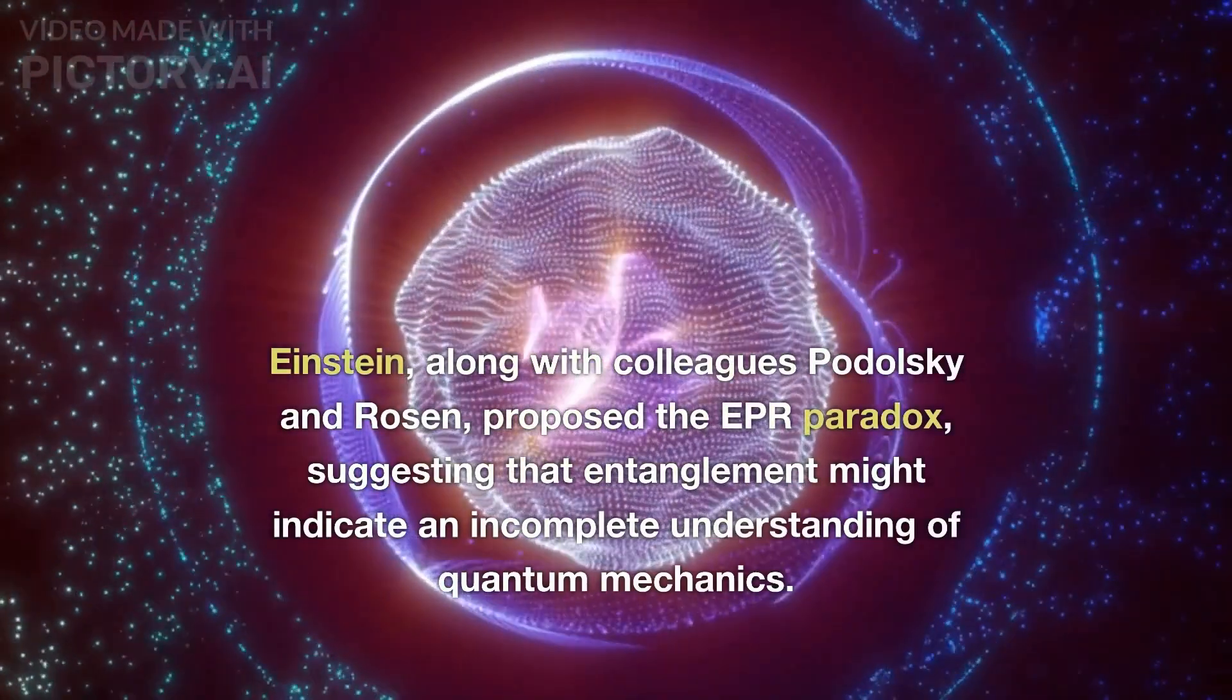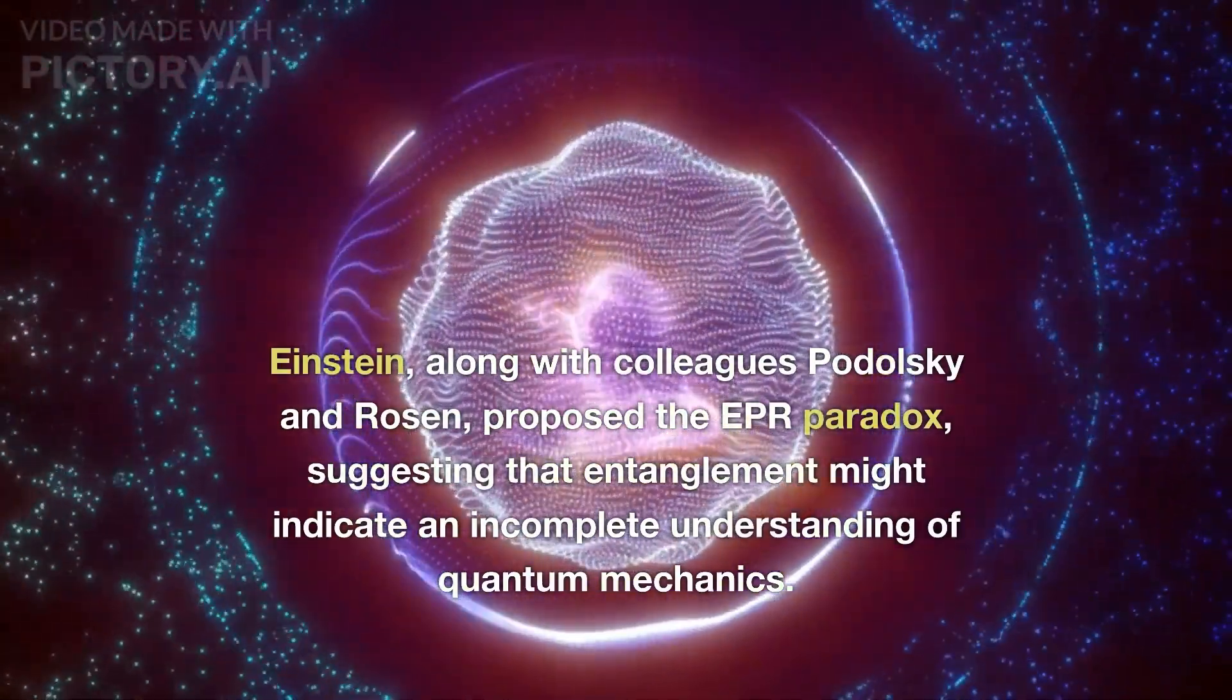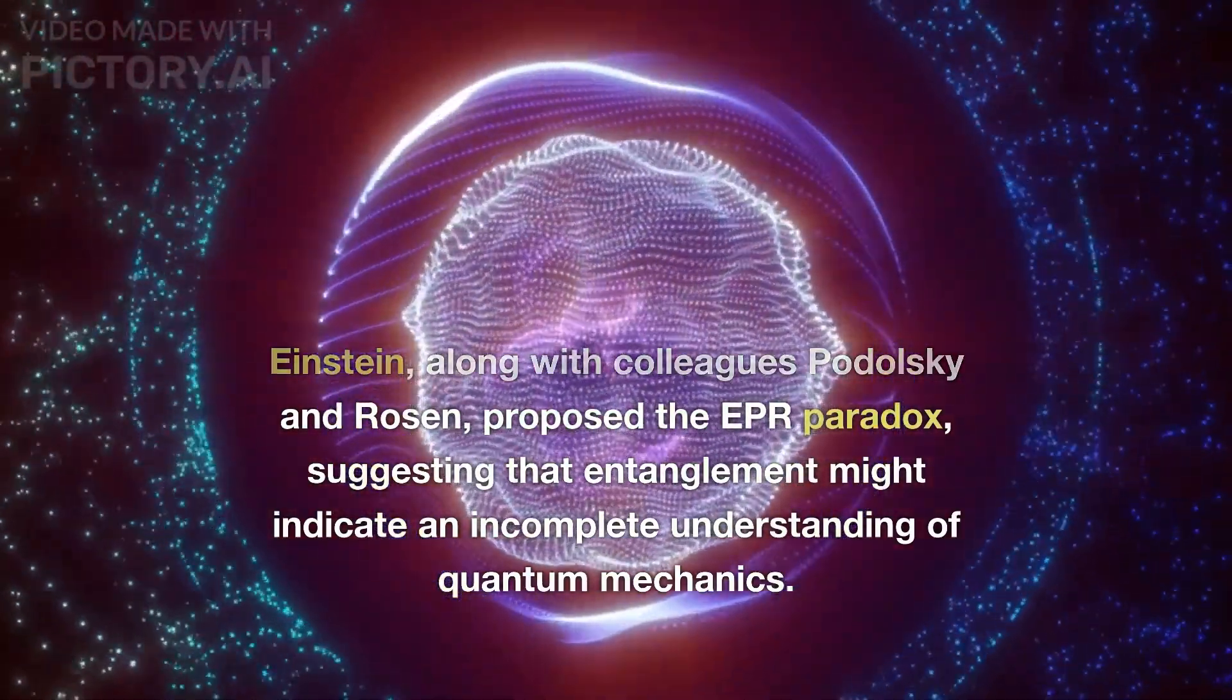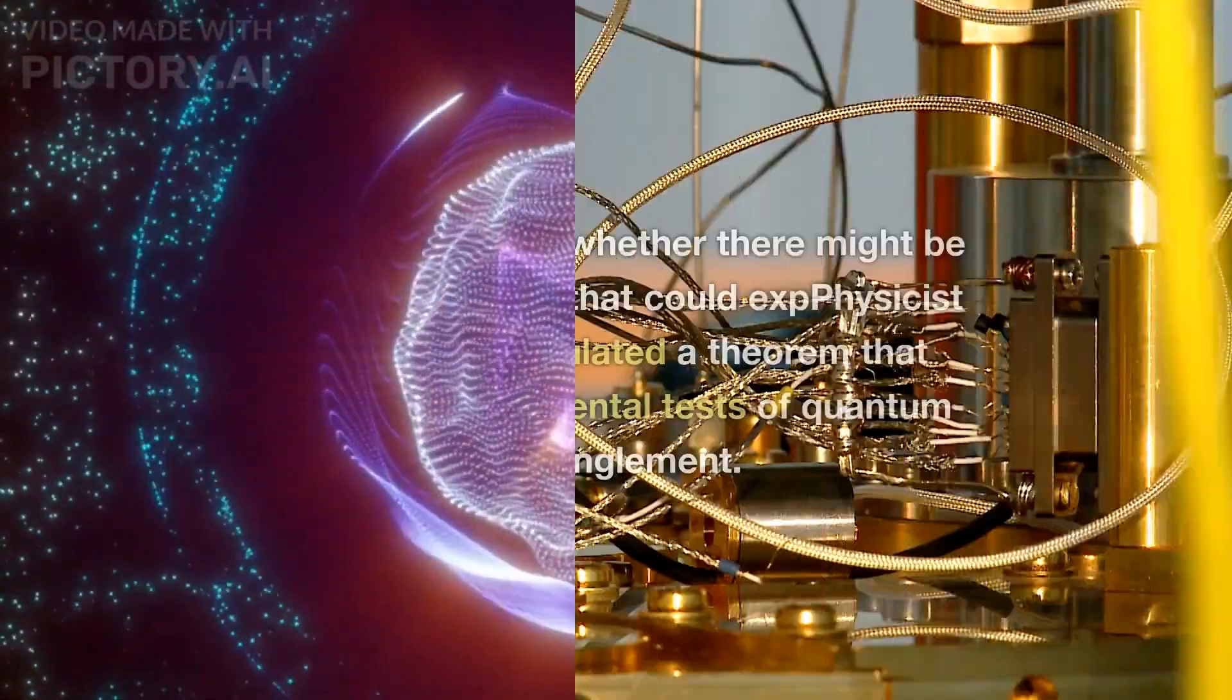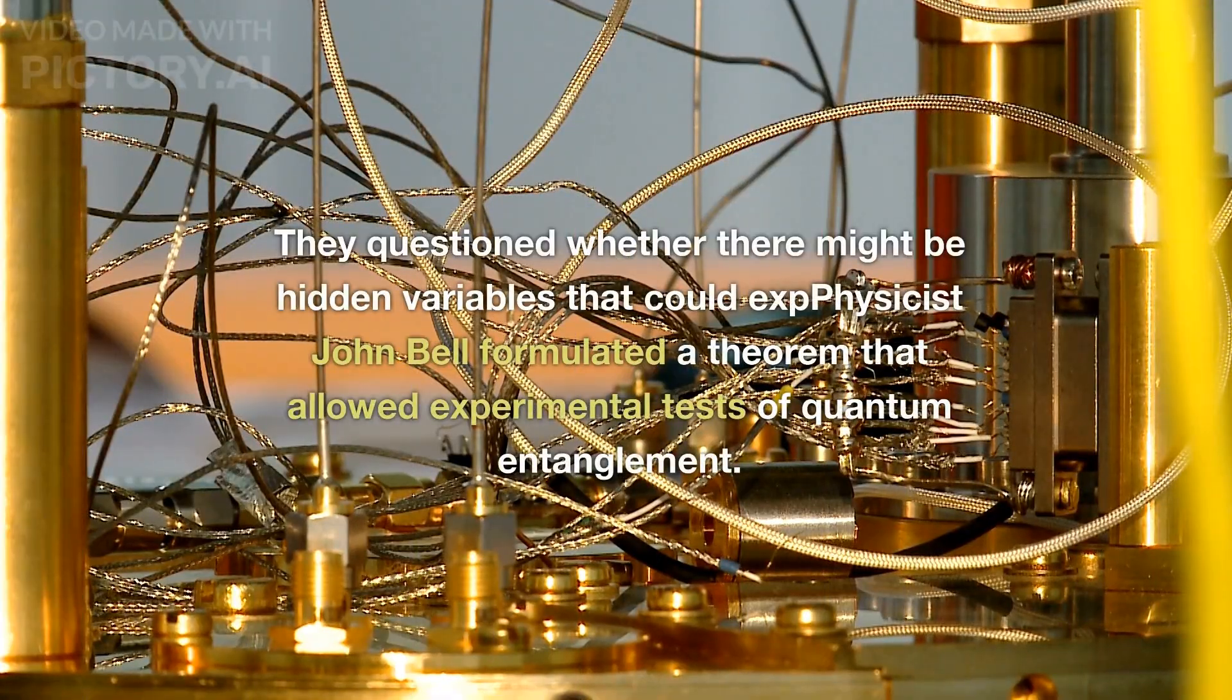Einstein, along with colleagues Podolsky and Rosen, proposed the EPR paradox, suggesting that entanglement might indicate an incomplete understanding of quantum mechanics. They questioned whether there might be hidden variables that could explain it.